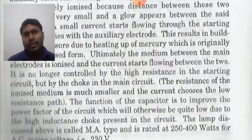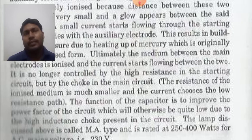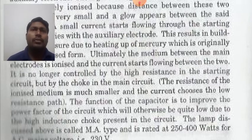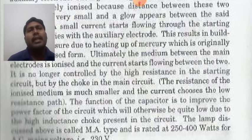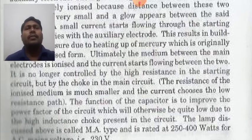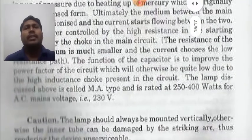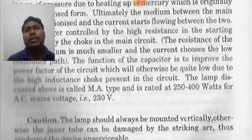The function of the capacitor is to improve the power factor of the circuit, which would otherwise be quite low due to the high inductance choke. The lamp is called MA type and is rated at 250 to 400 watts for a supply voltage of 230 volts.